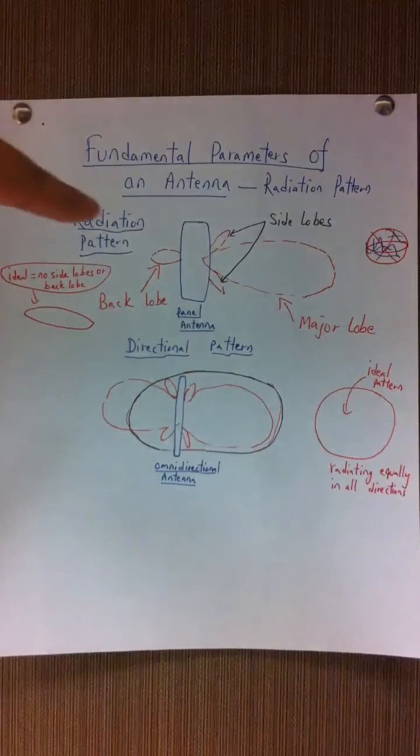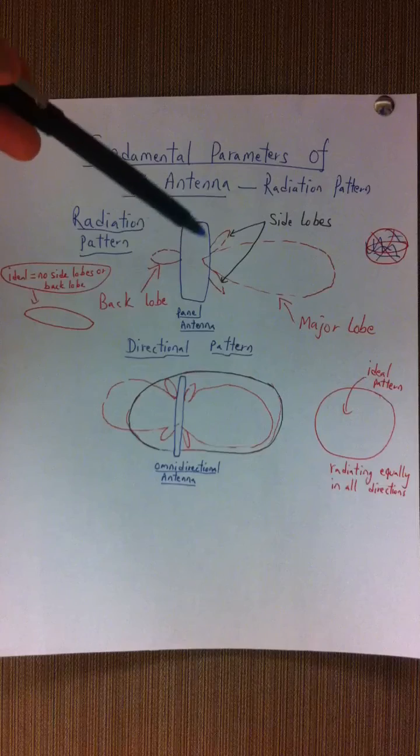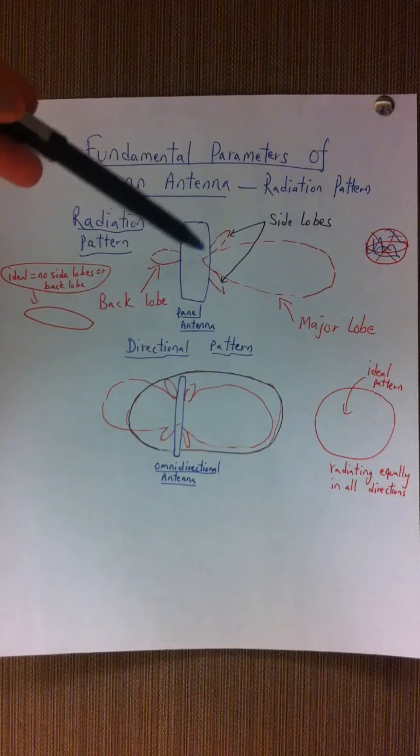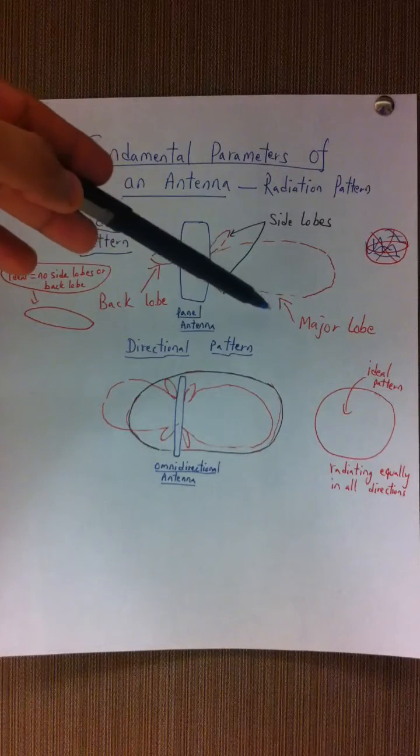In the first figure, you have basically a directional pattern. That means most of the electromagnetic waves are radiating towards the right, just in one direction, and this is called the major lobe.